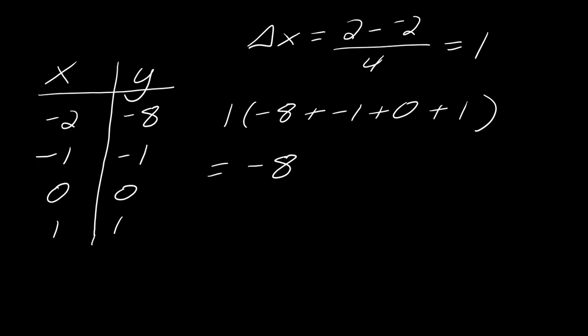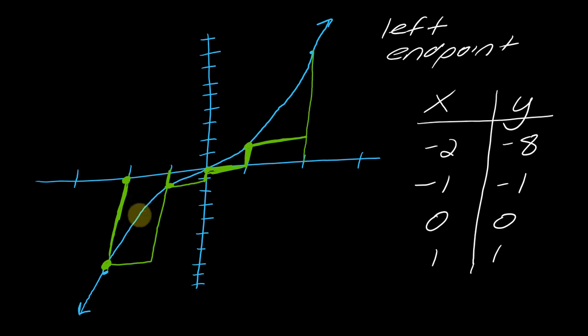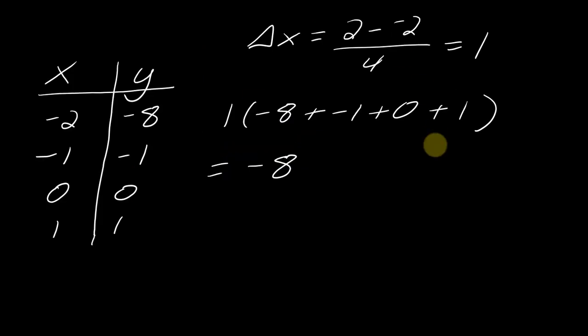And what that tells me is that I have bigger rectangles, larger rectangles that are underneath the x-axis versus above. So this is really what the Riemann sum tells you. And I know it's almost like nails on a chalkboard, right? Because it's like, but area is not supposed to be negative. So table that for now.